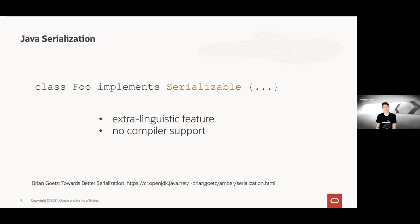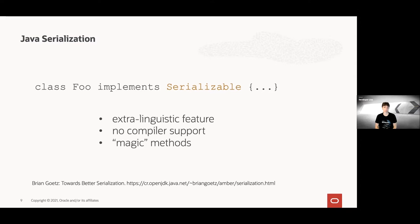There's also not a lot of compiler support. With a Foo class, for example, if there was a field of a type that was not serializable, you wouldn't get a compiler warning, but instead a runtime error. And then the last point is the so-called magic methods. You can customize the serialization process by using readObject or writeObject, but those methods are quite hard to find, don't belong to a public type, and are easy to get wrong — for example, if you don't specify the right access modifier. So overall, you can either depend on the framework to do everything for you, relying on opaque mechanisms, or implement it yourself, which is quite error-prone and not straightforward.